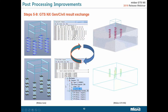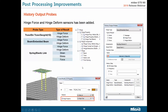The next improvement is history output probes. Hinge force and hinge deform results have been added for truss element types, geogrids, beam, spring, and elastic link elements. To use this, hinge property should be defined inside the property of the 1D element — we are not modeling the hinge as a separate element. After that, the usage is simple: check hinge force, select the elements where you want to check the result, and add.